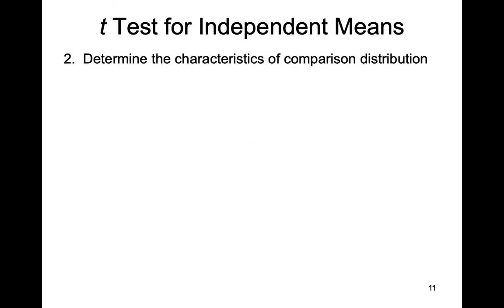Step two is to determine the characteristics of the comparison distribution. For our independent t-test, there are more steps than before. We know the mean of our comparison distribution is zero: on average, if we select a random mean from population one and one from population two, and under the null hypothesis they come from populations with the same mean, those random means should be equal. When we take the difference, it should be zero. So our distribution of mean differences should be centered around a mean of zero — under the null hypothesis, we're expecting zero difference between our two means.